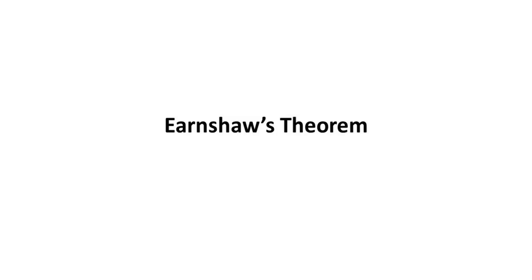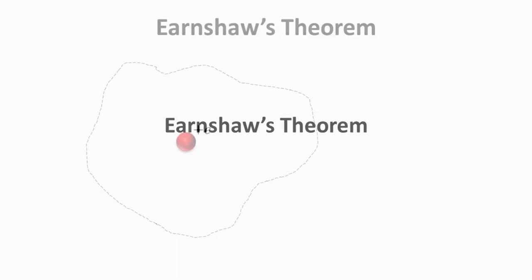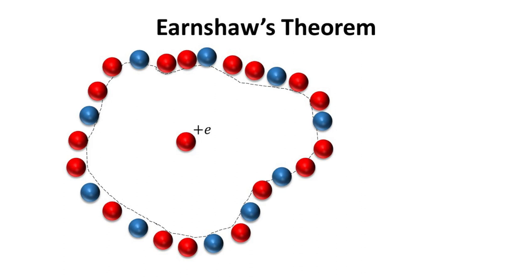Part 3: Earnshaw's Theorem. Imagine we have a point charge that we wish to trap in a region of space. An arbitrary electrostatic field can be established by placing free charges on the circumference of the space. Gauss's law requires that any electrostatic field will have zero divergence within the free space.